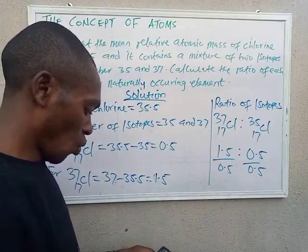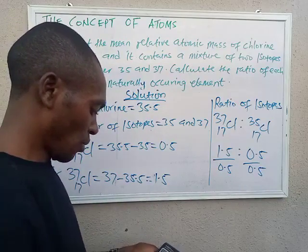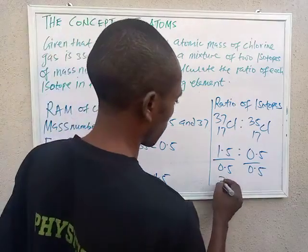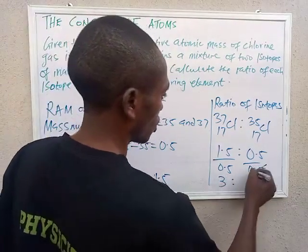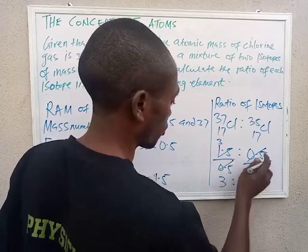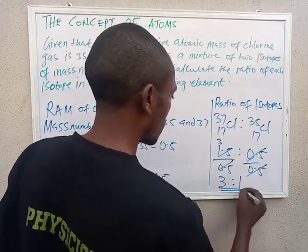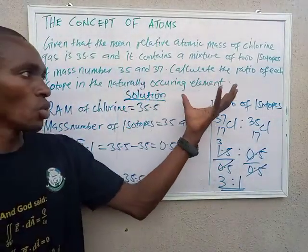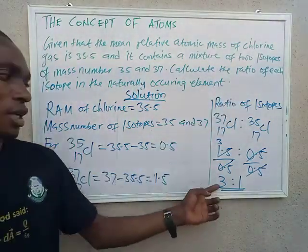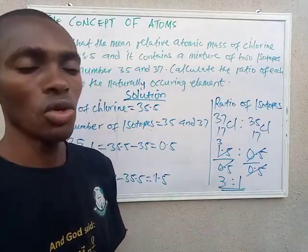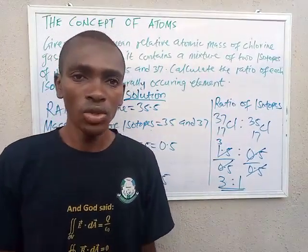1.5 divided by 0.5 gives us 3, and 0.5 divided by 0.5 gives us 1. So our answer is the ratio of these isotopes is 3 to 1. Thank you for watching, don't forget to like, share, and subscribe.